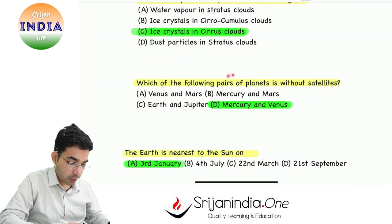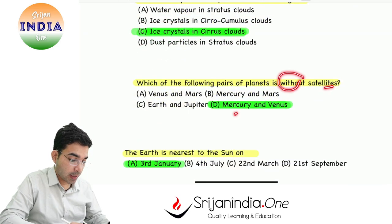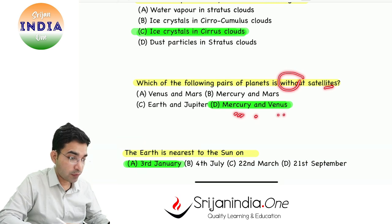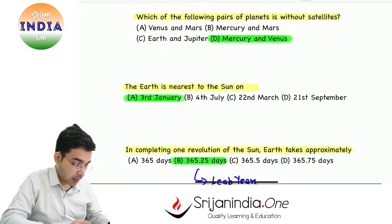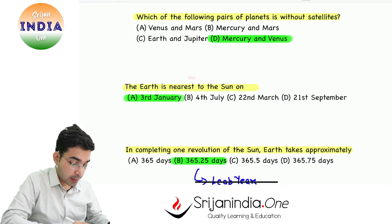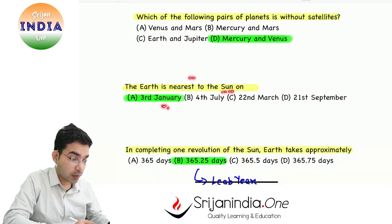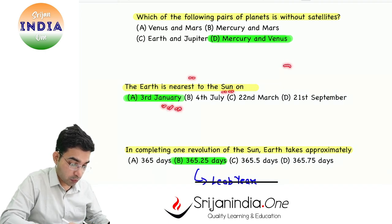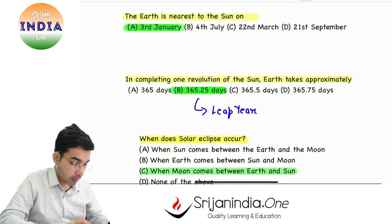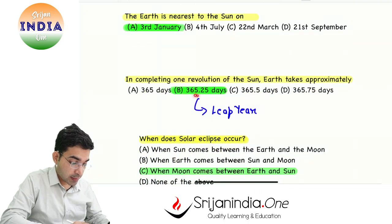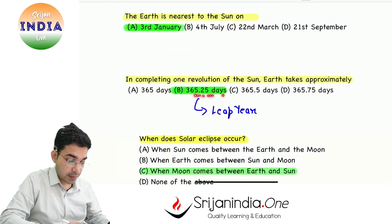Which of the following pairs of planets is without satellites? The answer is Mercury and Venus. The Earth is nearest to the sun on the 3rd of January — 3rd of January ko sun se nearest hoti hai Earth.